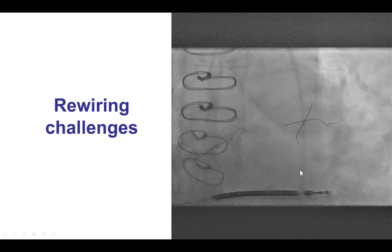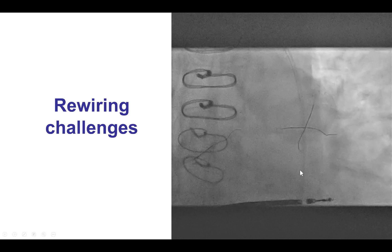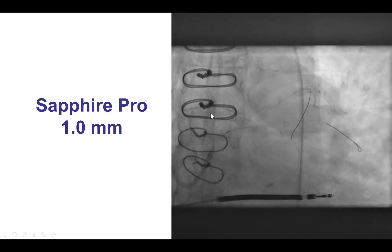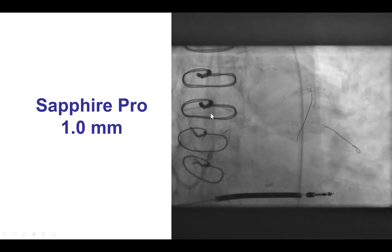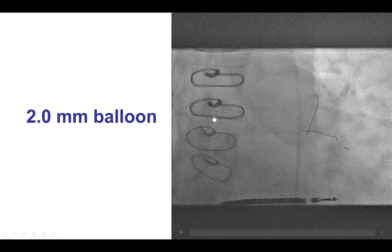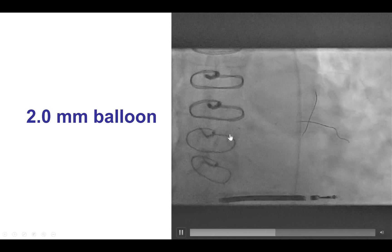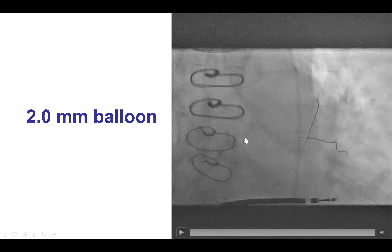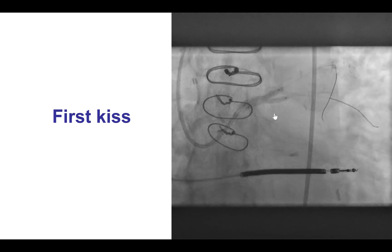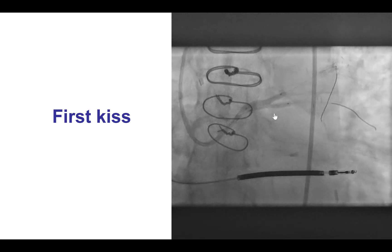Once again, we had difficulty rewiring — DK crush is not always an easy technique. We used different guide wires and different microcatheters, and eventually were able to wire it. We then used the Sapphire Pro 1.0 mm — the lowest-profile balloon — followed by a slightly larger 1.5 mm balloon, then a 2.0 mm balloon, gradually increasing the balloon sizes. Finally, after quite some time, we were able to perform our first kissing balloon inflation.